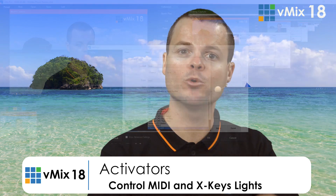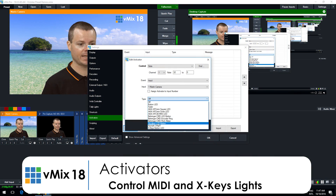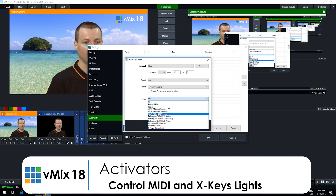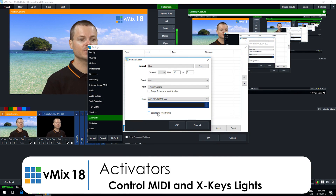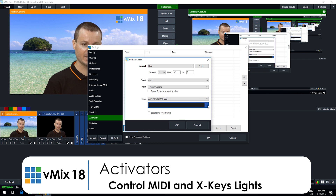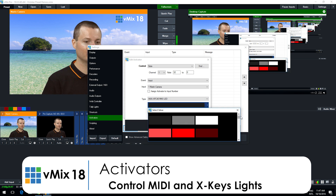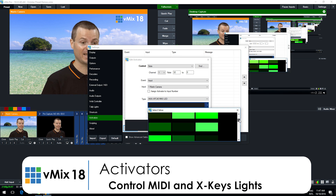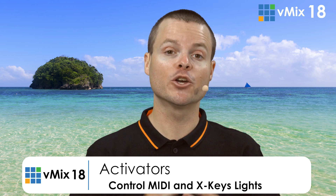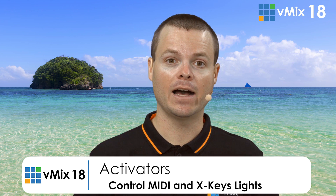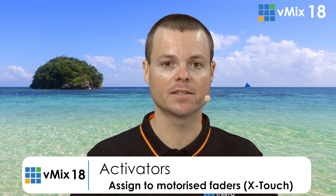For example, if you put an input into the output and you want a light to turn on, or you want a light to turn on or off when audio is muted or unmuted. There are a lot of different options to choose from, not just audio and switching, but a whole lot of other options. You can also assign the activators to various faders on motorized control surfaces, such as the Behringer X-Touch series.